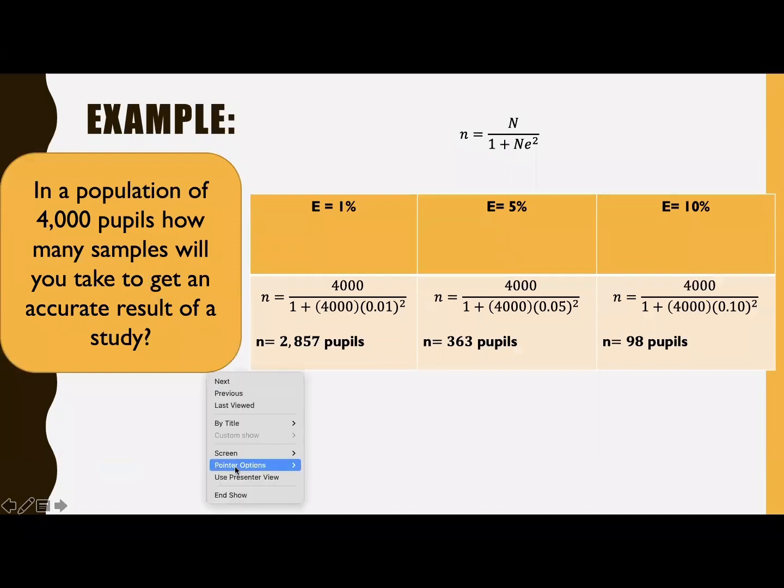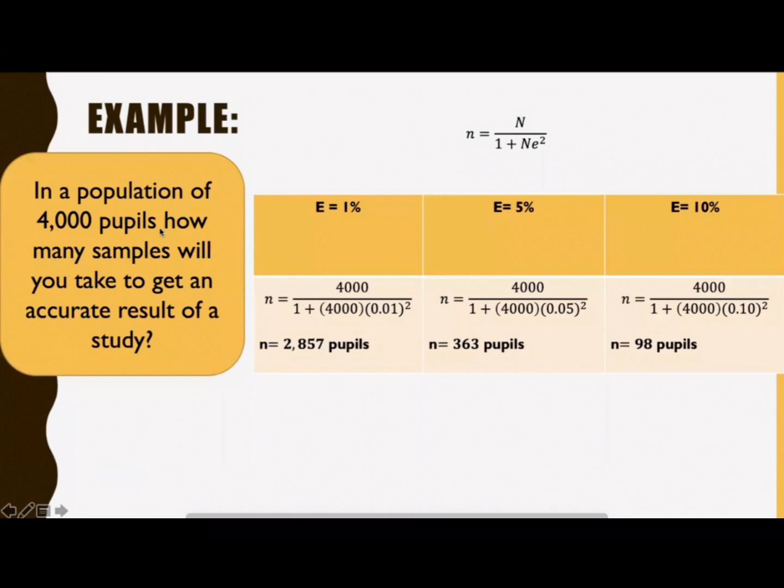Using the Sloven's formula and if margin of error is 1%, substitute in the formula. You have 4,000 divided by 1 plus 4,000 times 0.01 squared. The answer is 2,857 pupils.